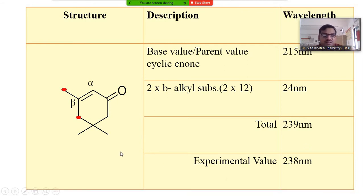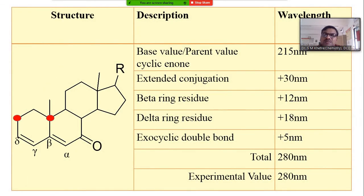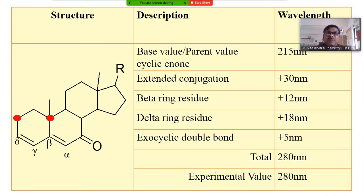Consider the next example, which is very interesting. Such complicated examples are asked in your final examination. When you find a very complicated molecule, do not be afraid of it. Once your basic ideas regarding the enone and diene systems are clear, you should not be afraid of that molecule, because you have your own knowledge for calculation of lambda max of enone and diene systems. First of all, try to clear your basic ideas.